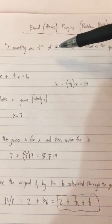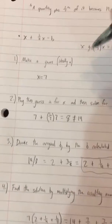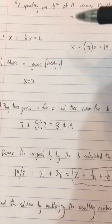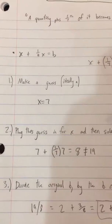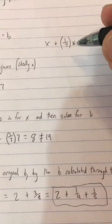So just to go over these steps again to solve for a quantity plus its 1/7th of it becomes 19, what is the quantity. First step is we want to put that question in the form of x plus 1 over ax equals b. For us, it was x plus 1/7th x equals 19. And then, we want to make a guess, which is ideally our denominator a. And so in our case, we guess 7.